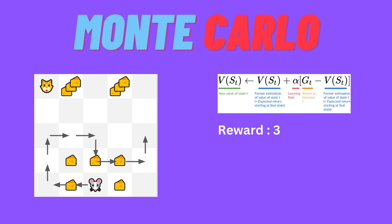Now, if we look at the Monte Carlo formula and substitute this reward, G of t equals 3. Previously, the initial state value is 0, so V of st is 0. The update is: V(st) = V(st) + alpha * (G(t) - V(st)). Alpha is the learning parameter — a hyperparameter. For simplicity, alpha equals 1.